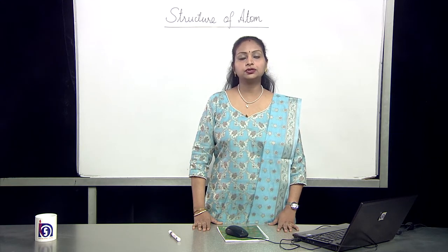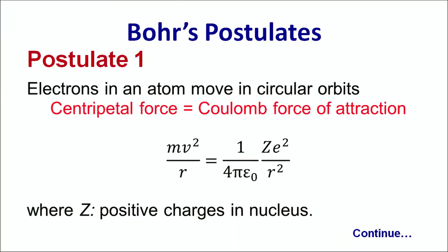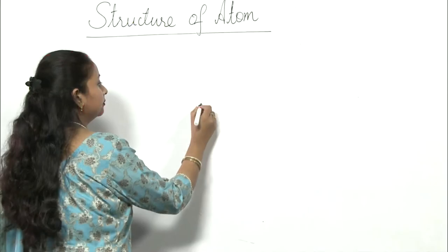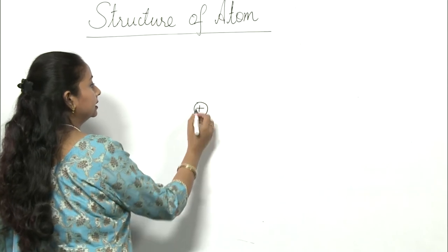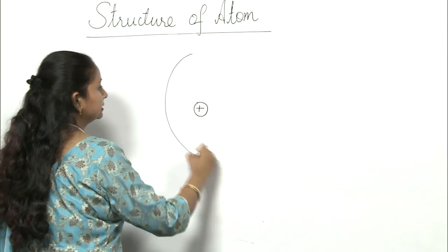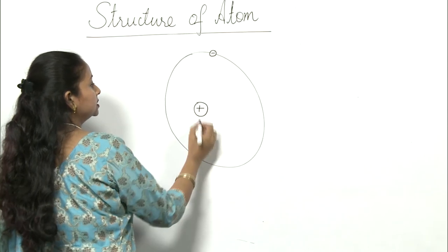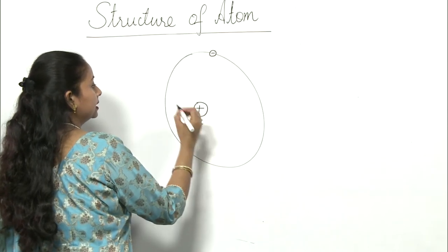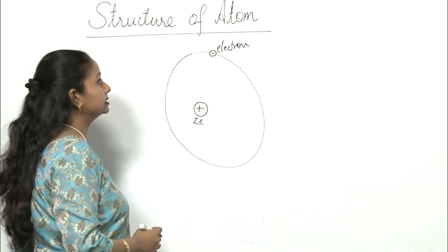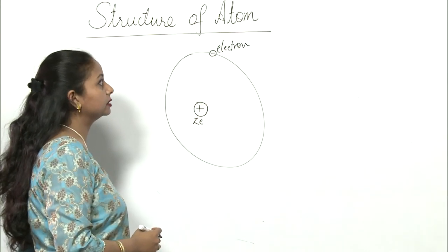The first postulate says that electron in an atom moves in a circular orbit. Now what do we mean by this? We mean by this that the electron is revolving round the nucleus which is positively charged and the electron is revolving in a circular orbit.